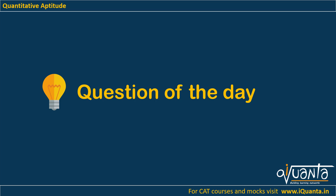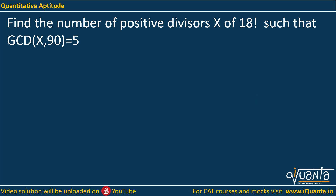Hello everyone, let's try to solve today's question of the day. It is again based upon numbers. We will be dealing with the factors of a number and the HCF. The question is: find the number of positive divisors x of 18 factorial such that GCD of x and 90 is 5.